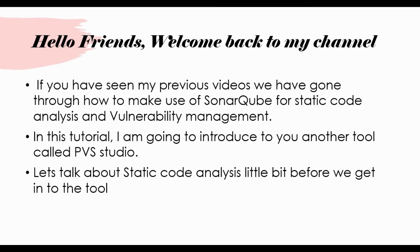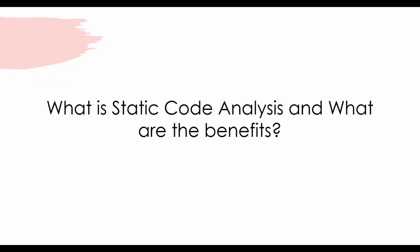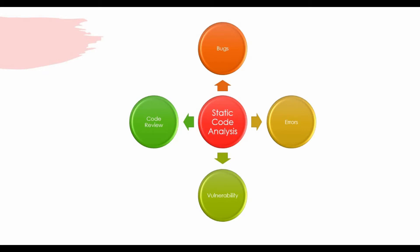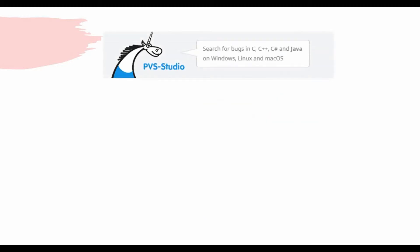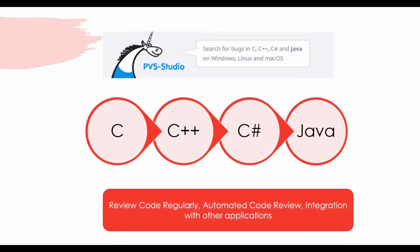Before I get into the tool, let's talk about what static code analysis is so you can get some understanding. Static code analysis, as the name says, is an analysis of your code. It is mainly used to find errors, bugs, vulnerabilities, or any code issues in your application. When you do application development and write a lot of code, automated code analysis can easily find these errors. There are a lot of open source and proprietary tools available, and PVS-Studio is one of them — mainly used for C, C++, C#, and Java applications.